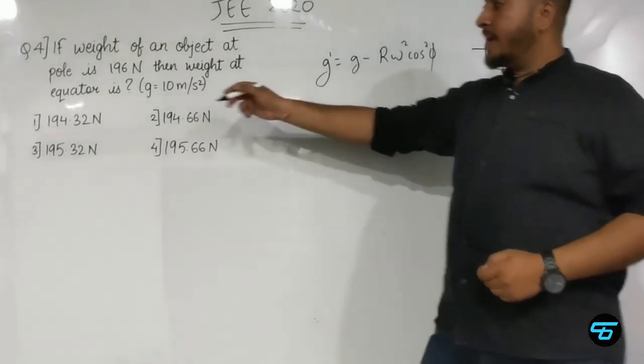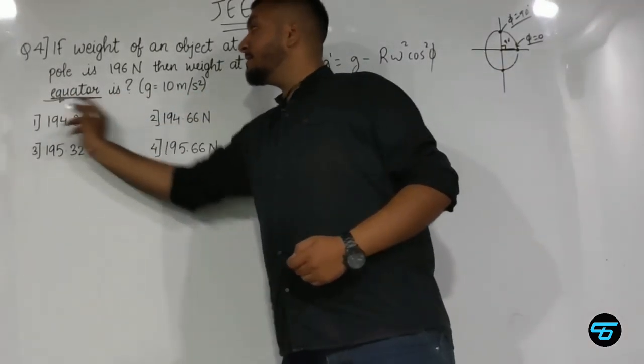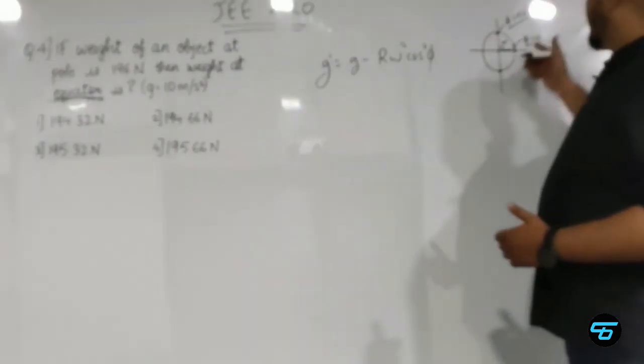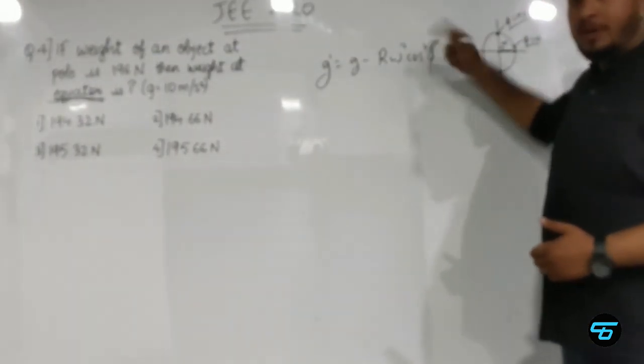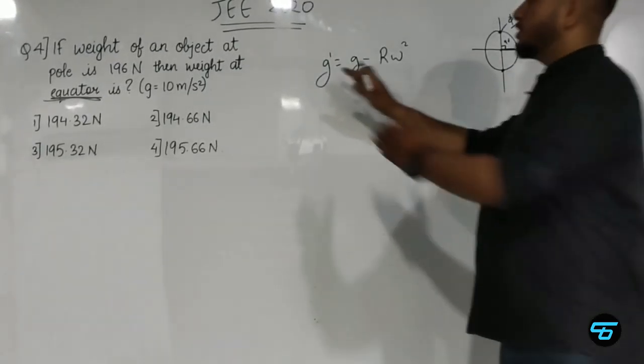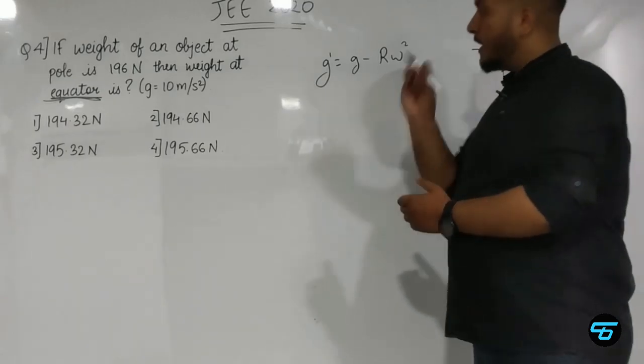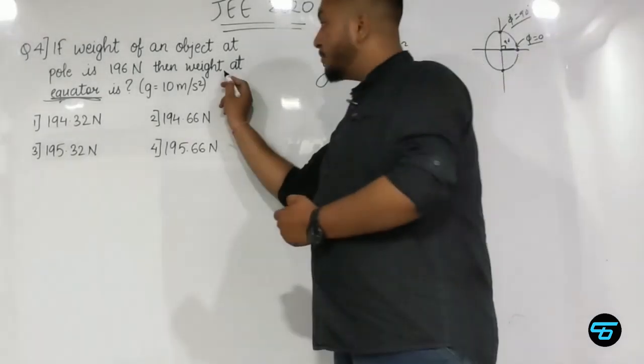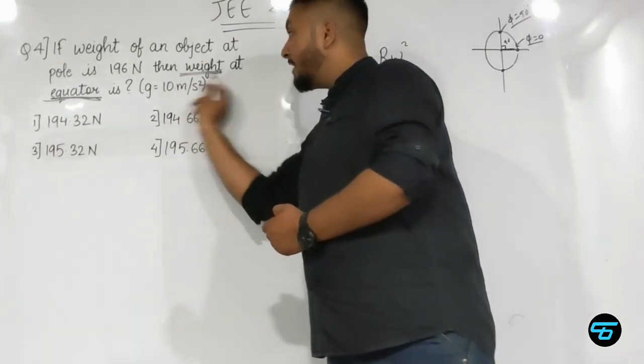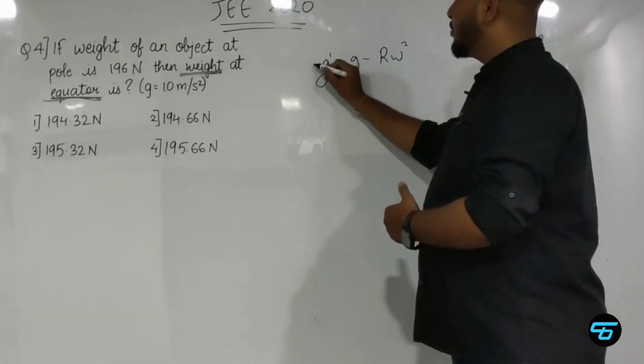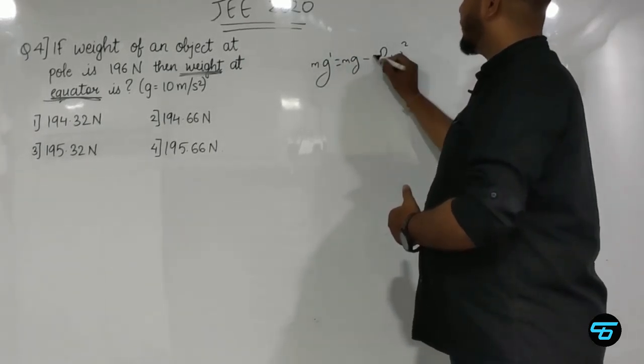At the equator, phi value is zero and cos zero is 1. So this cos square phi becomes 1. Now I will multiply mass everywhere in the equation to get the weights.